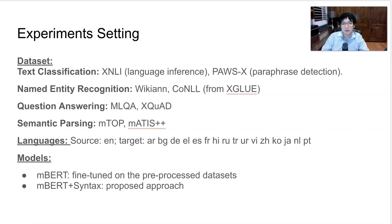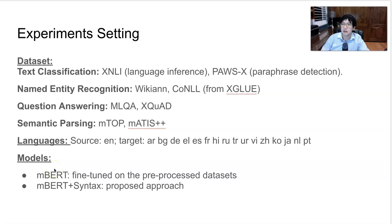We conduct experiments on multiple NLP tasks, including natural language inference, paraphrase detection, named entity recognition, question answering, and semantic parsing. Collectively, we consider 17 languages, always using English as the source language and transferring the model to the other 16 languages. In the paper we compare several models, but here I show results comparing the baseline multilingual BERT against our proposed multilingual BERT augmented with syntax information.